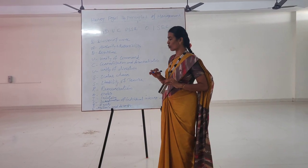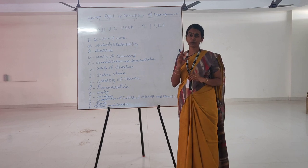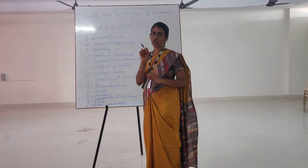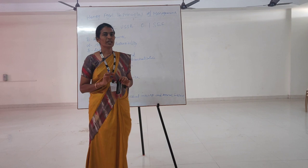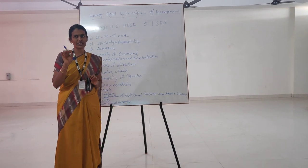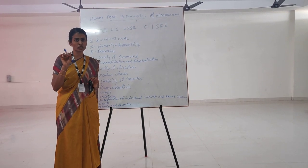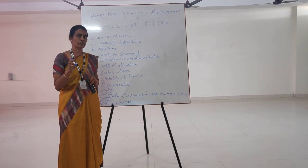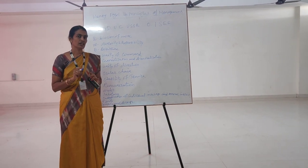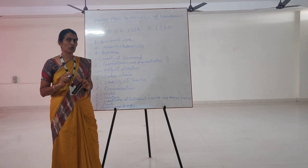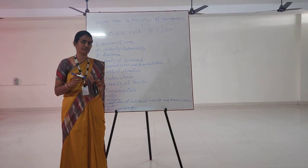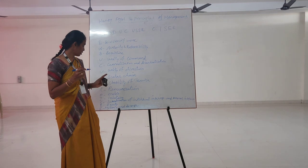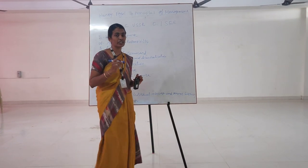The next one is Order. These two aspects are related to the arrangement of things and people. There should be a place for everything and everything should be in its place. Likewise, the right person should be in the right place.